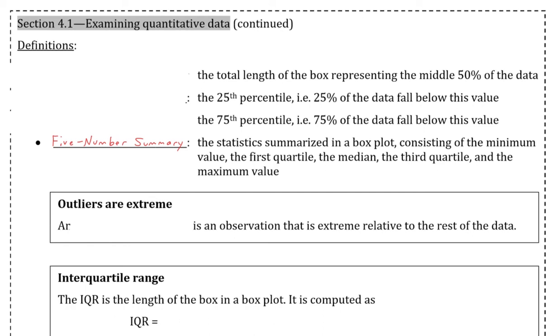We already know what the minimum, the median, and the maximum are, but the first quartile is the 25th percentile, i.e. 25% of the data fall below this value, and the third quartile is the 75th percentile, i.e. 75% of the data fall below this value. Also note that the median is sometimes known as the second quartile, since two quarters, or 50% of the data fall at or below that value.